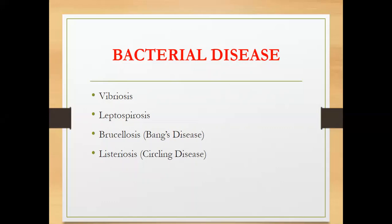Leptospirosis has several serovars that can be host-specific, meaning they only affect certain species. Examples of these serovars include pomona, canicola, grippotyphosa, hardjo, icterohaemorrhagiae, and bratislava. Leptospirosis affects all species of mammals. Its effect is late-stage abortion, which is heartbreaking for the farmer. If the fetus survives, it will come out weak — producing weak piglets or calves.